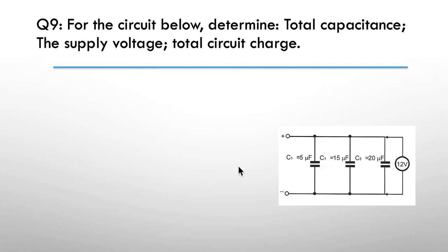Question nine: for the circuit below, determine the total capacitance, the supply voltage, and the circuit charge. We have three capacitors — 5 microfarads, 15, and 20 — and we're told there are 12 volts across the 20 microfarad capacitor. Hint: C total equals C1 plus C2 plus C3.